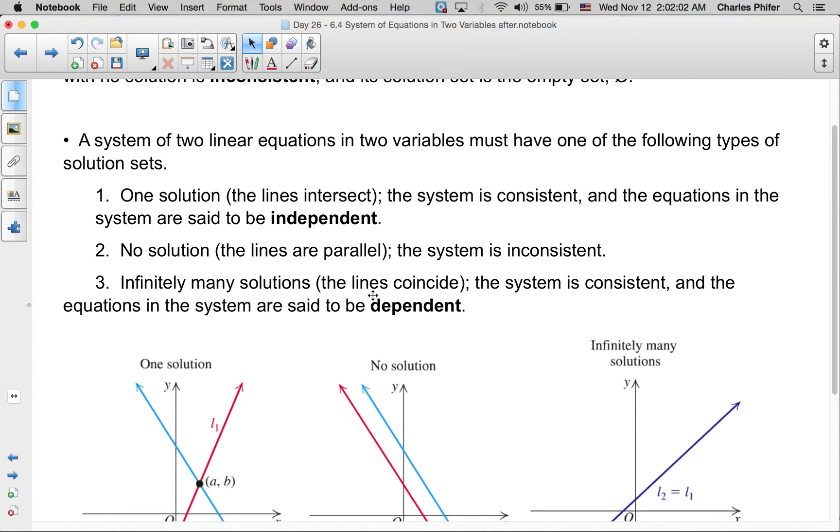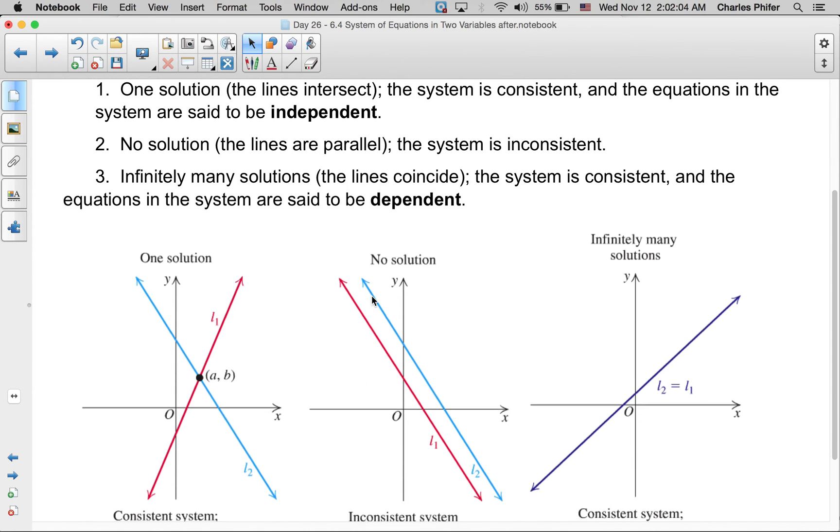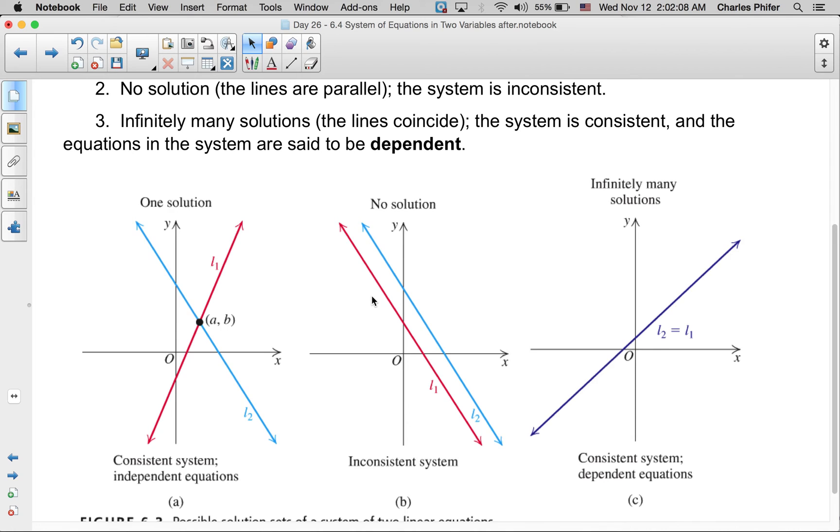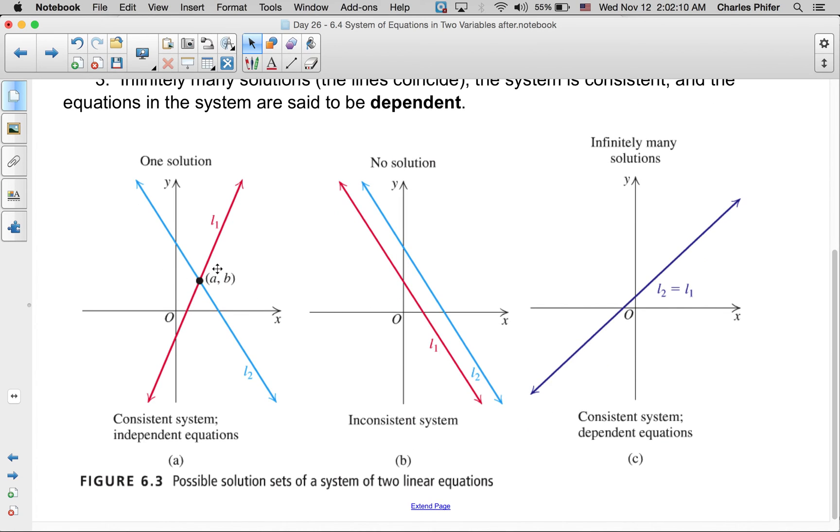These are your scenarios: the lines can cross and you get one solution, they can be parallel and you have no solutions, or they can essentially be the same line—maybe just a multiple of each other—and you have infinitely many solutions.